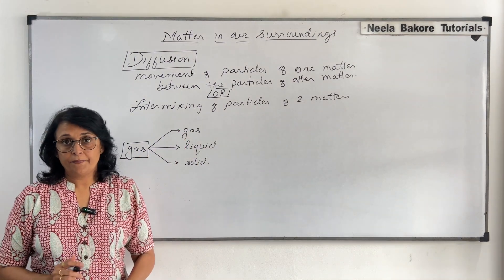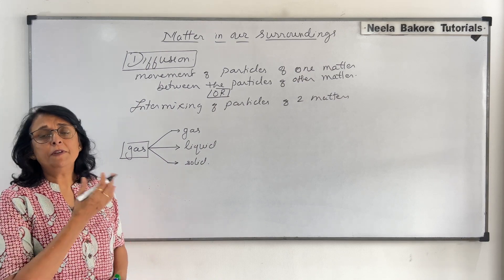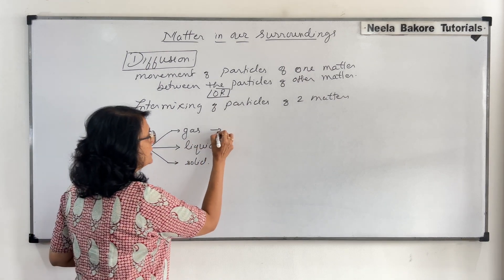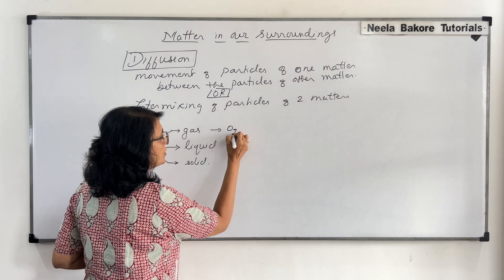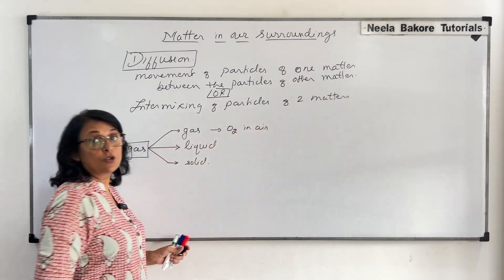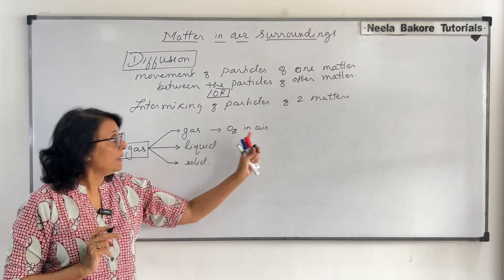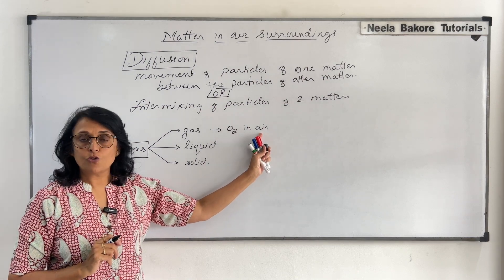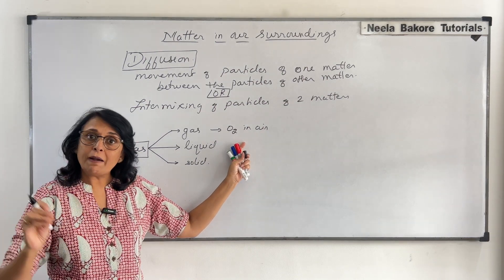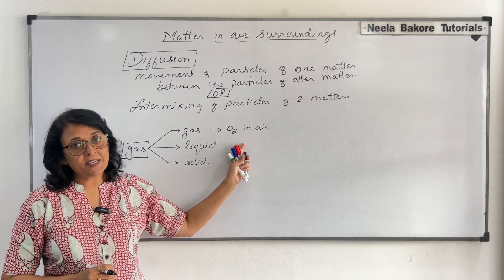Gas into gas — very simple. When we take the example of the atmosphere, say oxygen in air. Oxygen is also matter, air is also matter. So oxygen is moving between the particles of the other gases which are present in the air.